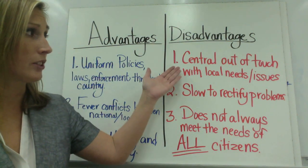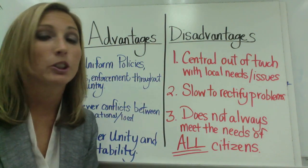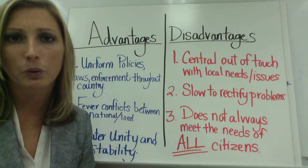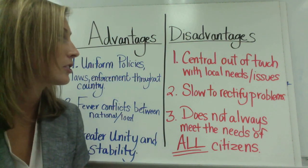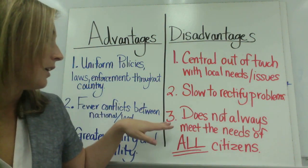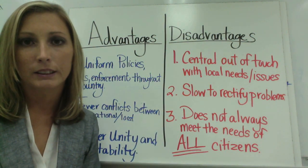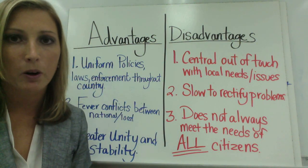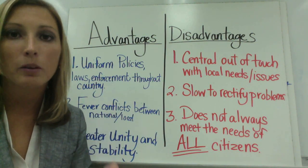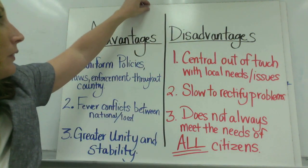The disadvantages are: first, the central authority would be out of touch with local needs and issues. Second, because the central authority can be so out of touch, it is slow to rectify problems. Third, it does not always meet the needs of all citizens — sometimes when the central power becomes too involved in local needs, it tends not to meet the needs of everyone under the system.